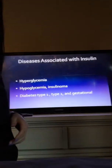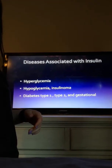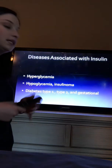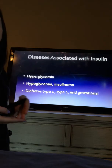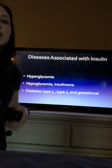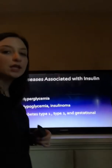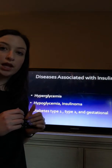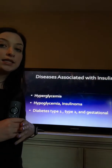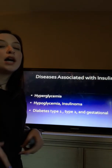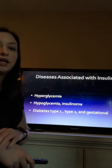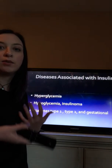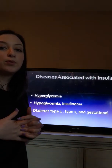The diseases associated with insulin are hypoglycemia, hyperglycemia, and the more common diabetes. There is type 1 diabetes, type 2 diabetes, and gestational diabetes. Type 1 is something you can be born with or it can come on in early childhood; it's something you'll have to manage for the rest of your life. It means your body is not able to produce insulin, so it requires a pump or a pen to deliver insulin whenever your body needs it.